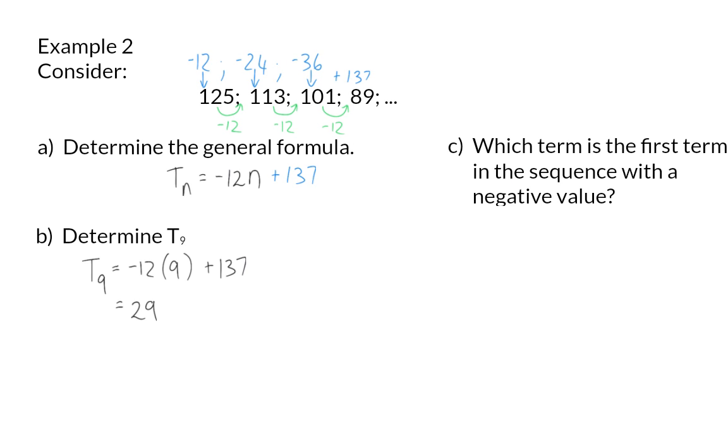Question c: Which term is the first term in the sequence with a negative value? We just determined that term 9 has a value of 29. So, from here we can continue to determine term 10 by subtracting another 12 to get 17.